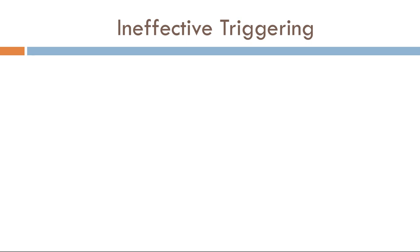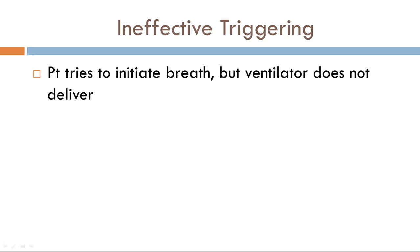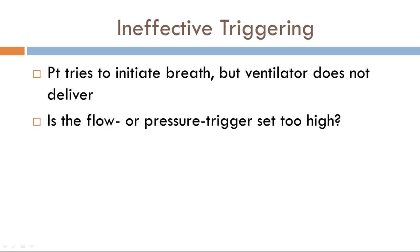In ineffective triggering, the patient tries to initiate a breath; however, the ventilator does not recognize this and as a result doesn't deliver a breath. What are the causes? The trigger threshold may be set too high — you, the operator, determine whether the trigger variable is flow or pressure. If the patient's flow or pressure surpasses the threshold you've set, a breath is triggered. But if the threshold is set too high, the patient won't get a breath, resulting in ineffective triggering.